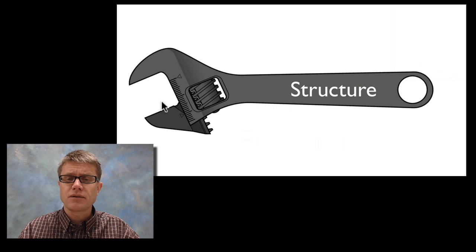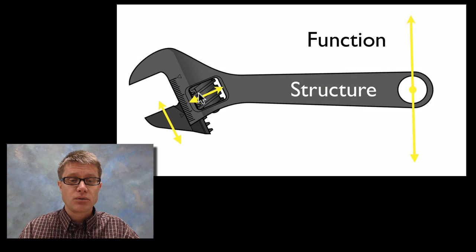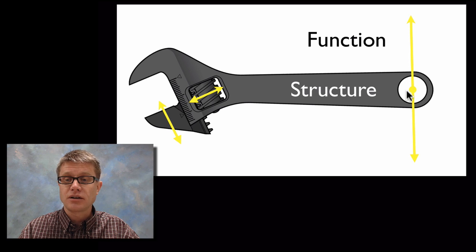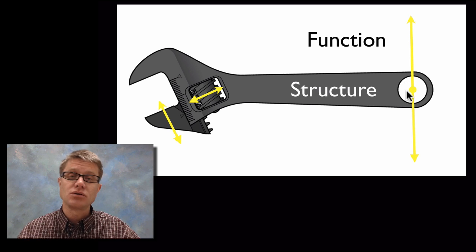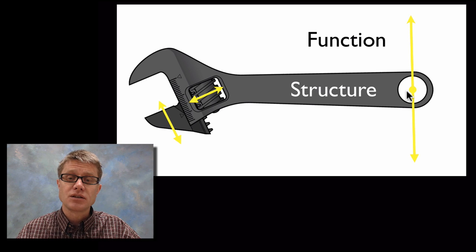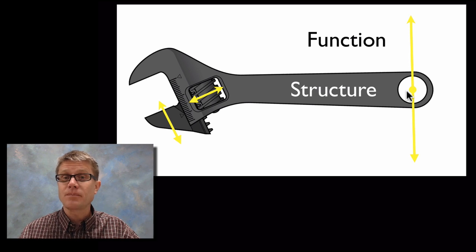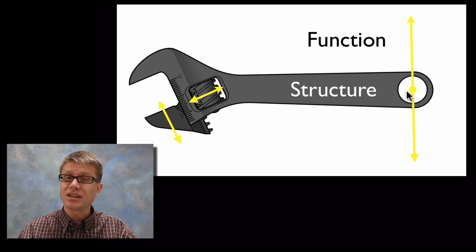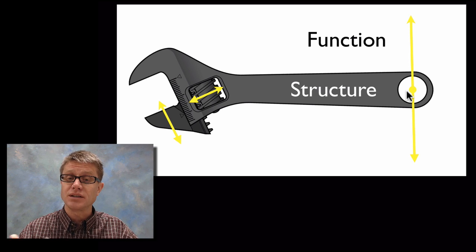But it doesn't speak to their function. Function is going to be what it does. And so when I spin this dial the adjustable spanner is going to change in this direction. I also can move it up and down so I have a huge amount of leverage. Now we're talking about function. And so in sciences we call these two things, structure and function, anatomy and physiology. Anatomy is what it is and physiology is what it does.